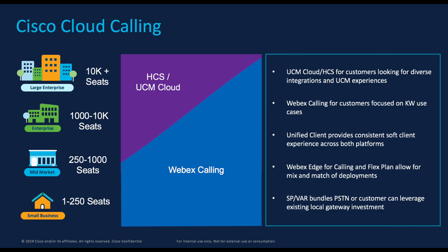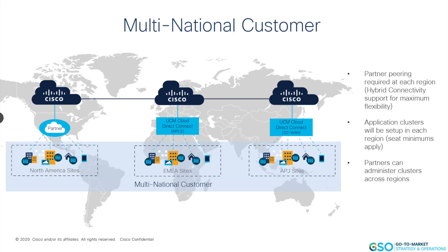From a scalability perspective, both solutions can scale up to thousands and thousands of users. With Webex Calling, we have global customers deployed on our platform with headquarters in the US and branch offices in EMEA and APJC. Same goes with UCM Cloud — we have data centers across the globe in EMEA, APJC, as well as in the US, and customers with branch offices in multiple regions can easily scale up using our scalable platform.